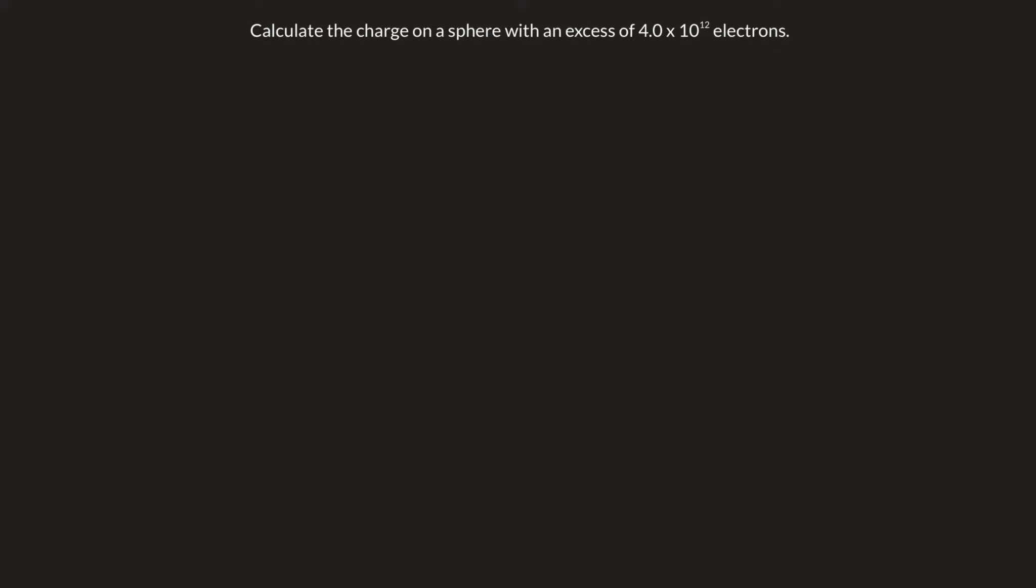This question is related to the data found in Millikan's experiments or his oil drop experiment to be precise. So based on that experiment, we know that one electron has a charge of 1.6 times 10 to the negative 19 coulombs.